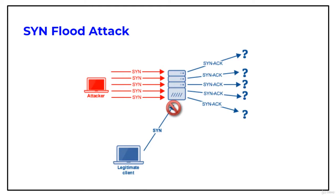SYN flooding takes advantage of a flaw in the way most hosts implement a TCP 3-way handshake. When a host receives a SYN from another host, it must keep track of the partially opened connection in a listen queue for at least 75 seconds. A malicious host can exploit the small size of the listen queue by sending multiple SYN requests to the host but never replying to the SYN-ACK request.